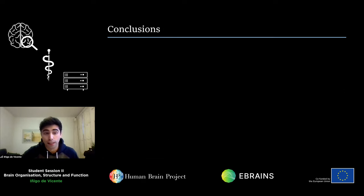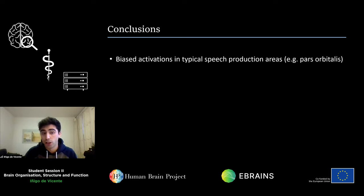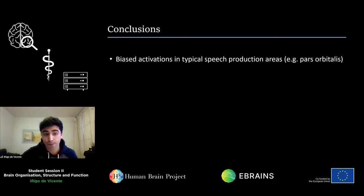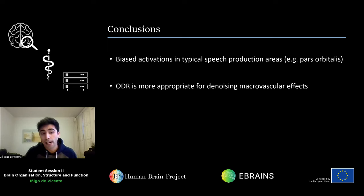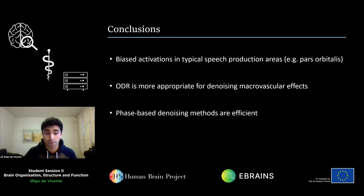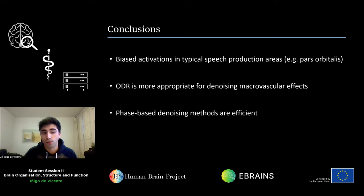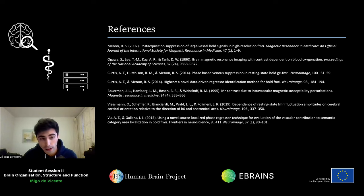The conclusions of this study are: first, that activations in the pars orbitalis during speech production tasks could have been previously influenced by large vein effects. Second, that ODR is in principle more appropriate than OLS for denoising purposes. And the main take-home message is that these kinds of methods can be efficient to improve the accuracy of brain activation maps. I will be very happy to answer any questions. Thank you very much.